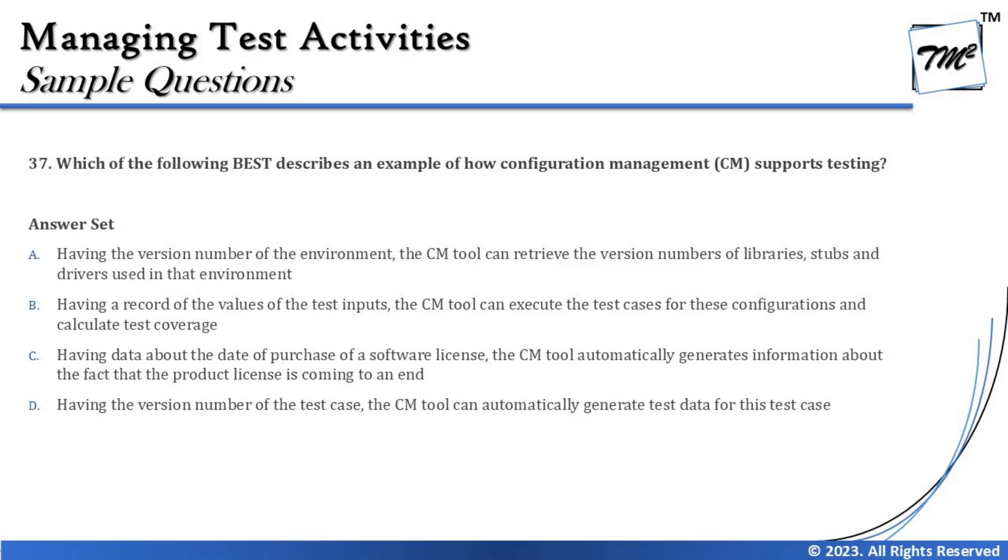The next question is question number 37, which is about configuration management. It asks: which of the following best describes an example of how configuration management supports testing? Configuration management was one of the smallest topics in the syllabus. At a high level, it deals with four major things: unique identification of every item, version control, managing the history of revisions, and traceability — linking artifacts together. CM helps manage testing artifacts and work products in the same way.